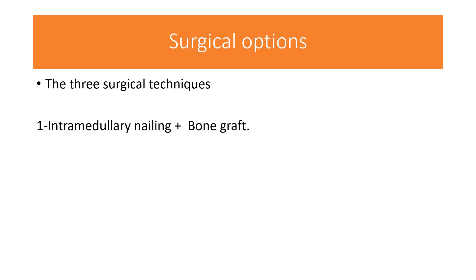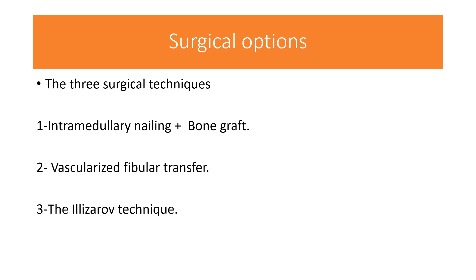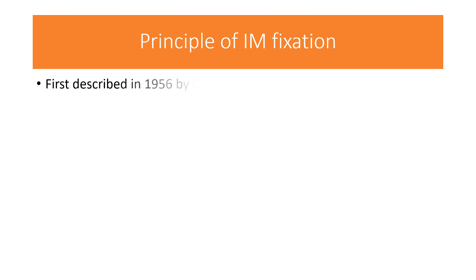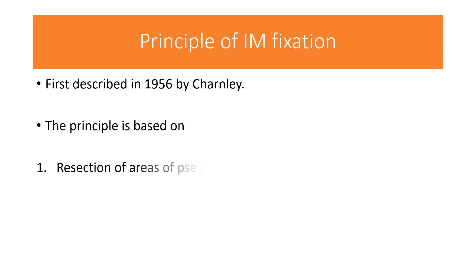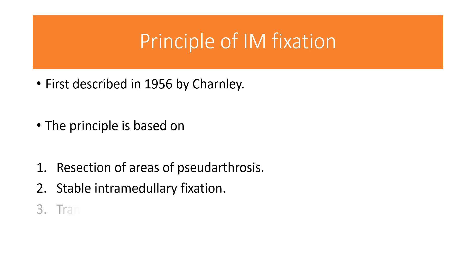There are three surgical options: intramedullary nailing with bone graft, vascularized fibular transfer, and the Ilizarov technique. Intramedullary fixation was first described in 1956 by Sir Charnley. The principle is based on resection of the area of pseudarthrosis with stable intramedullary fixation and transfer of a large bone graft.